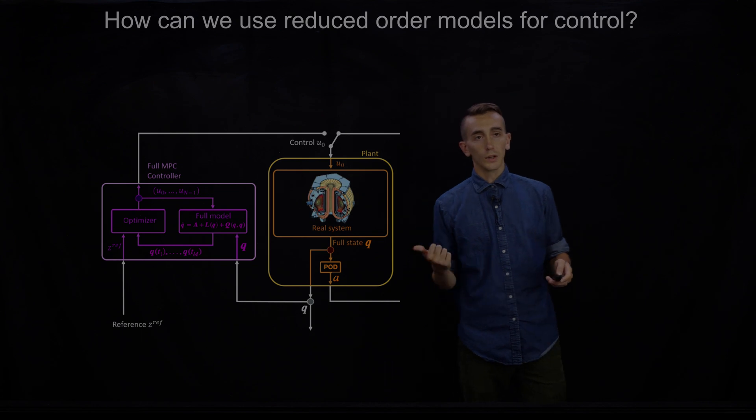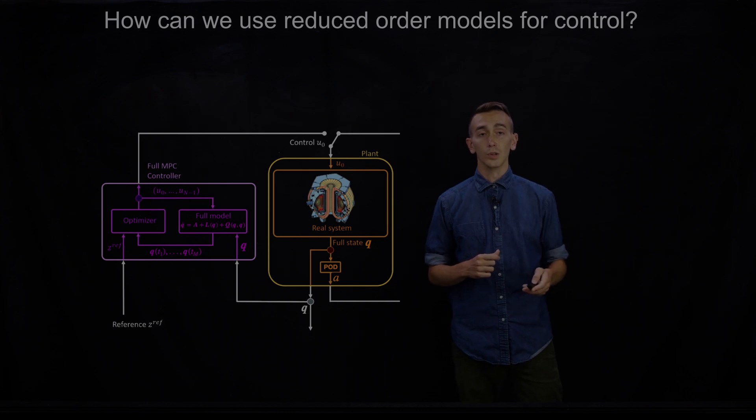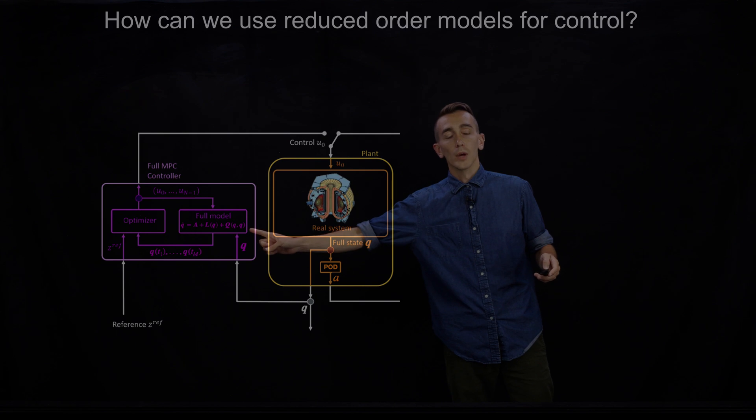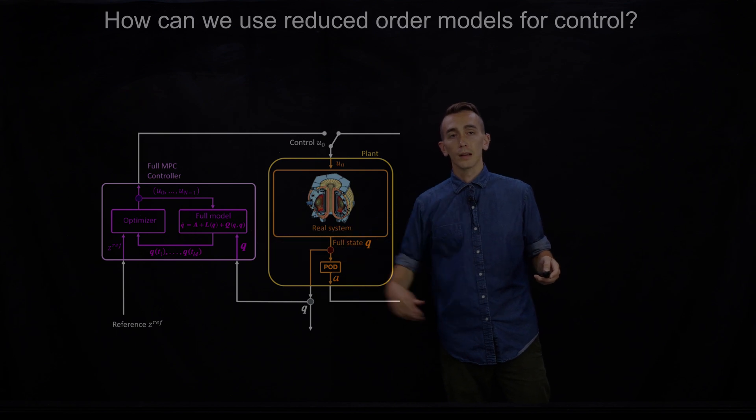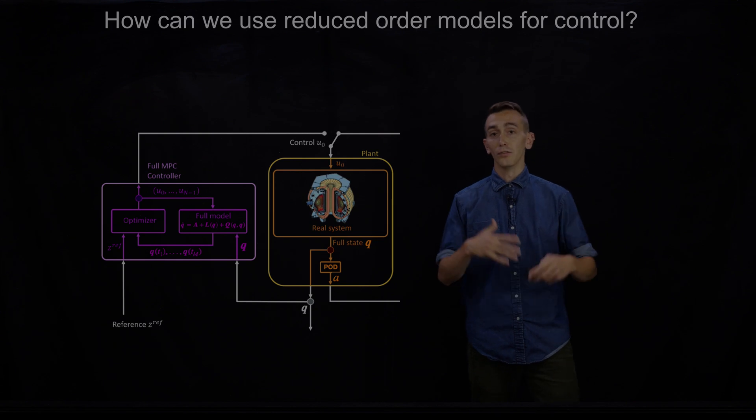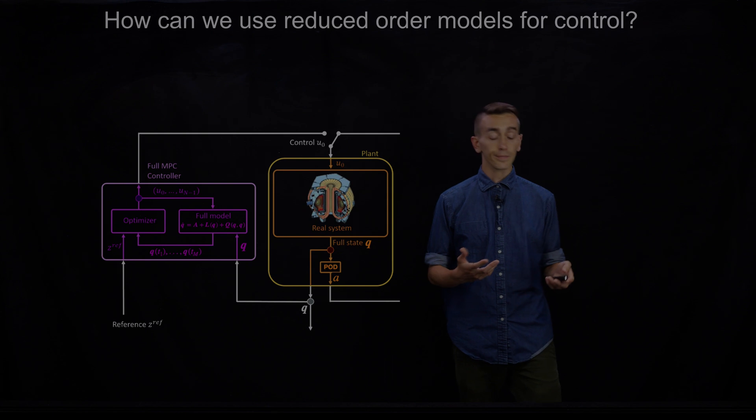Of course, we don't typically have full state measurements because that's extremely difficult, especially in these fusion plasmas. And we also can't evolve these full models because this might be full kinetics and trying to evolve full kinetics in real time on a very complicated 3D geometry is just not tractable.